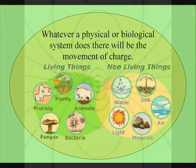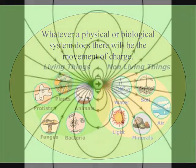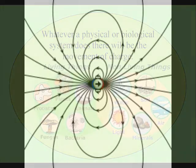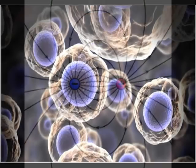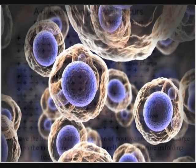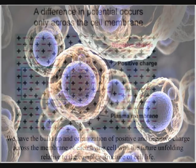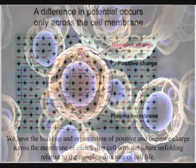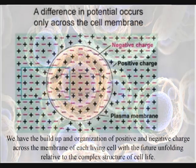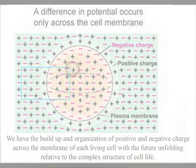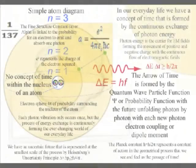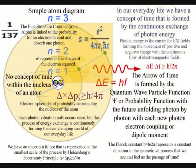This is because charge is an innate part of all matter. Therefore, whatever a physical or biological system does, there will be the movement of charge. We can see this with the build-up and organization of positive and negative charge relative to the membrane of each living cell. The movement of charge is formed by the spontaneous absorption and emission of light photon energy.